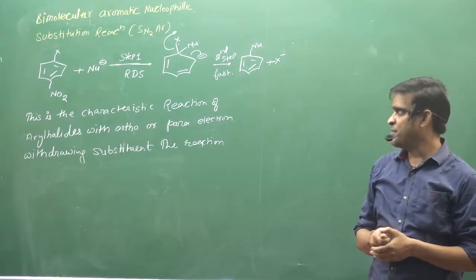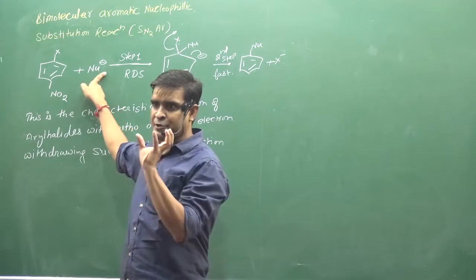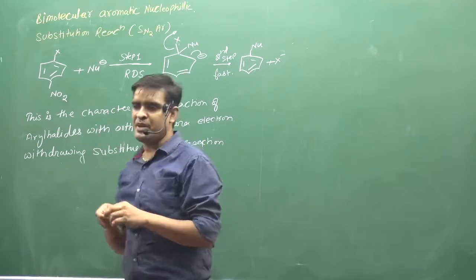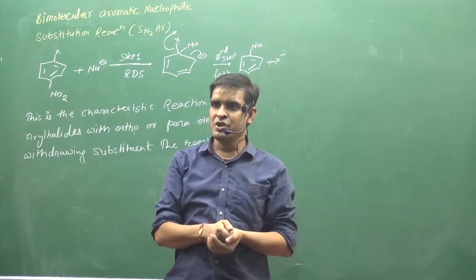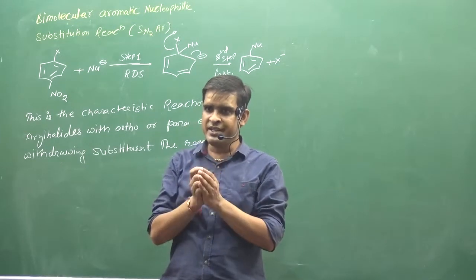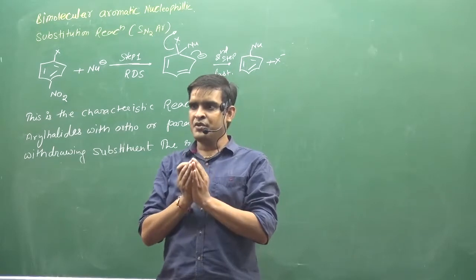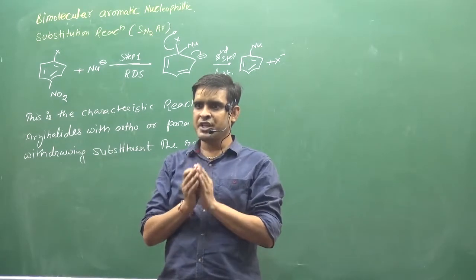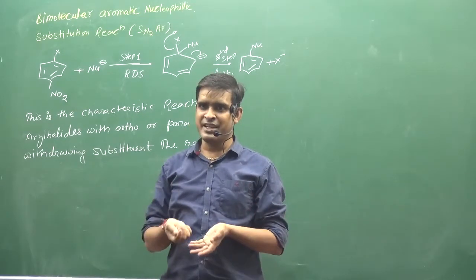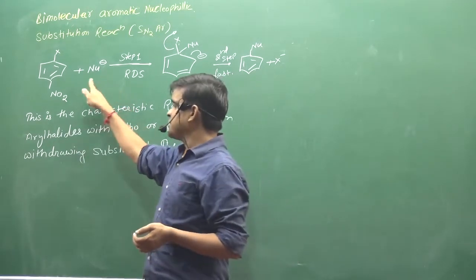First of all, you have a negative charge density in the nucleophile, and the benzene ring also has an electron cloud - so what will they do? They will repel. Generally, aromatic compounds do not give nucleophilic substitution reactions. We should look at electrophilic instead. Nucleophilic will not work. So what is happening here?